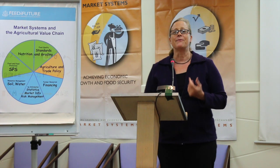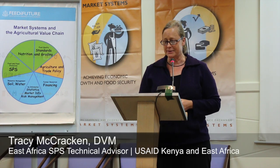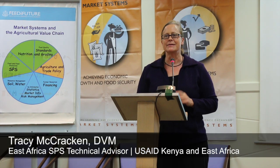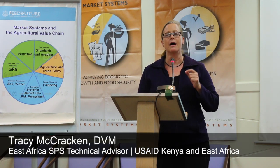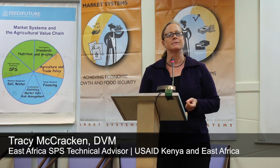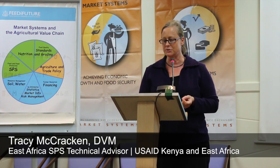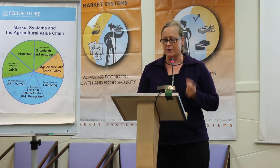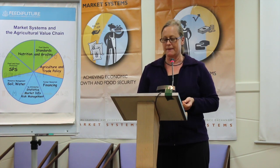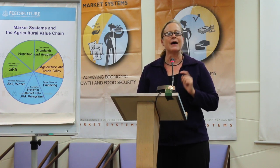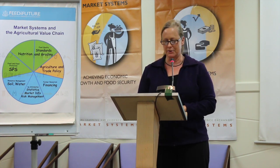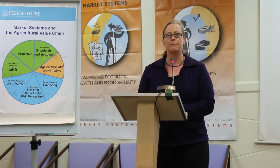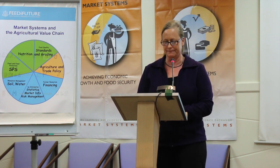USAID has defined a market system as having multiple components. A market system includes value chains, the relationships among them, the broader support and enabling environment in which they operate, and the households and communities engaged and affected by these value chains, both directly and indirectly.